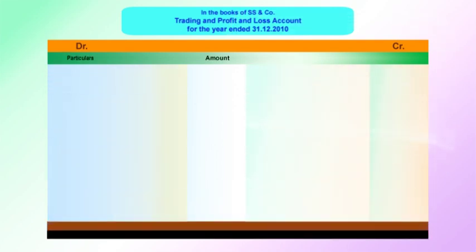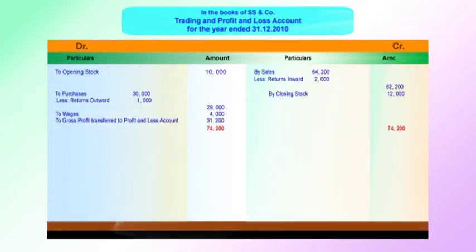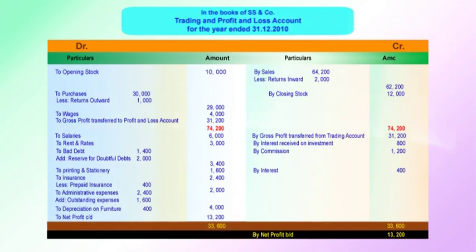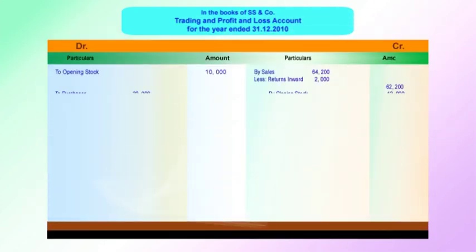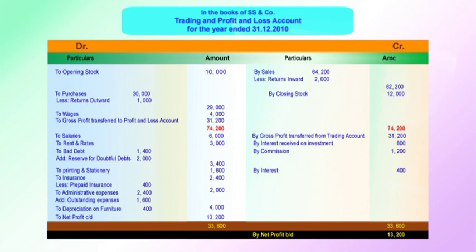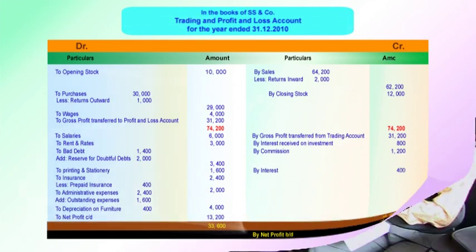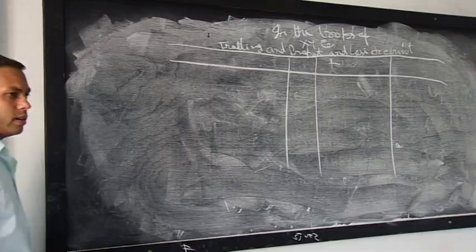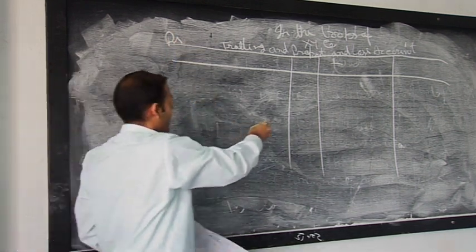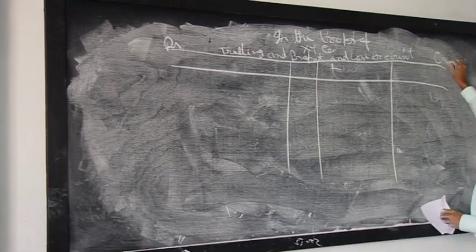We write this in the books of XY company — the company for which we are preparing the final account. We head it: Trading and Profit and Loss Account for the year ended 31st March 2013 (or as per the question). The trading and profit and loss account has a debit side and a credit side, each with a particulars column and an amount column in rupees.